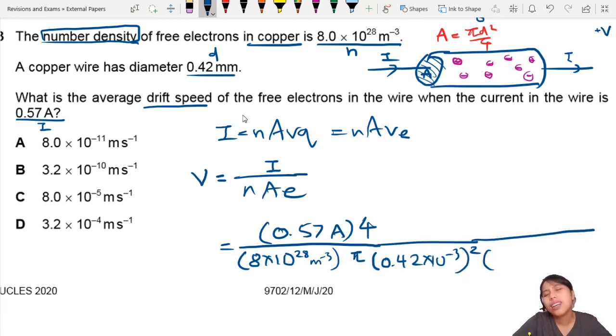Oh, forgot the e. Okay, so e is 1.6 times 10 to the negative 19 coulombs. That was a very long thing to read out. Okay, let's calculate.